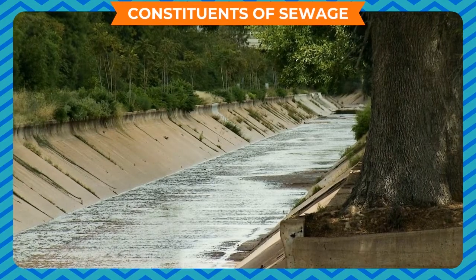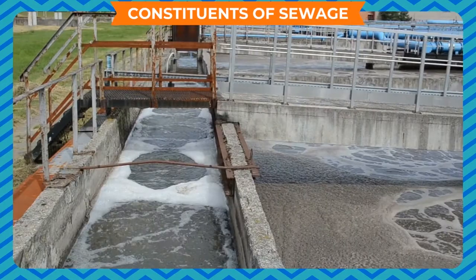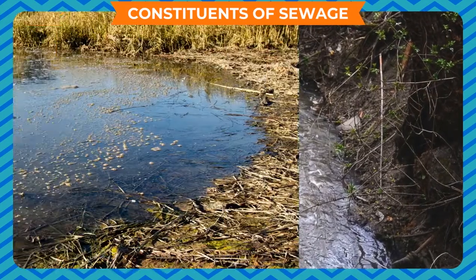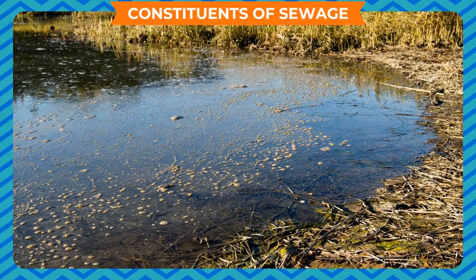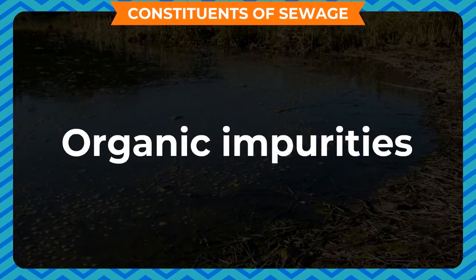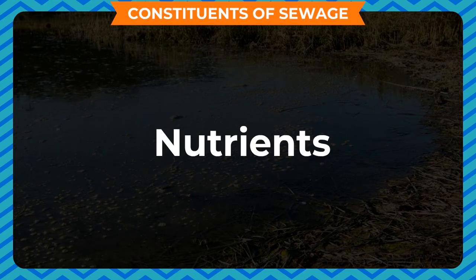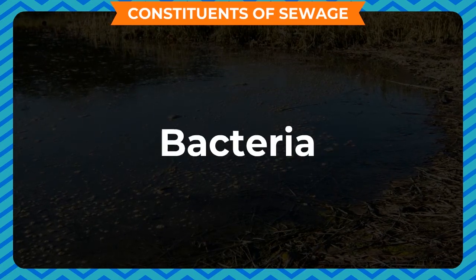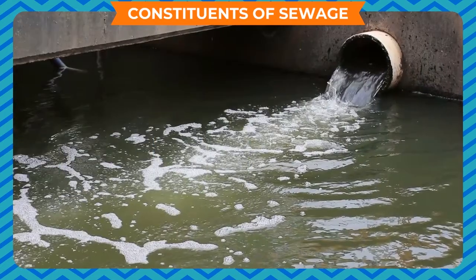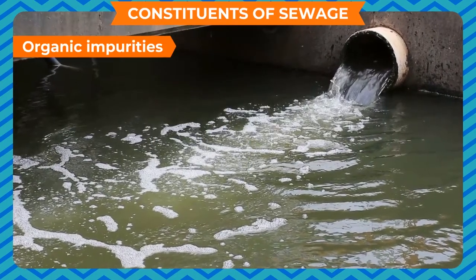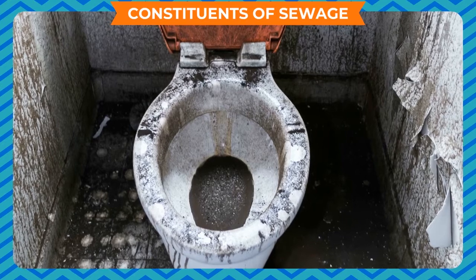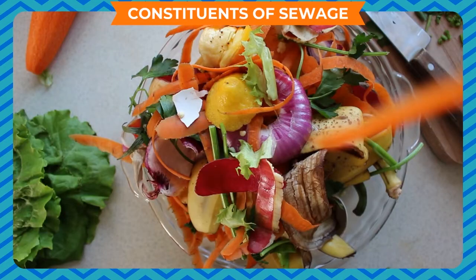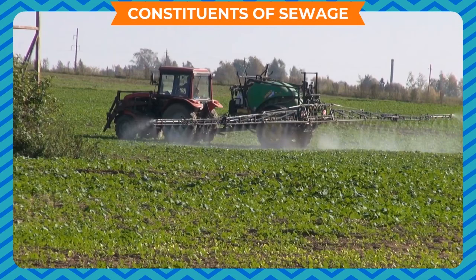Constituents of Sewage: Waste water generated from all the above-mentioned sources contains dissolved and suspended impurities — a complex mixture containing organic and inorganic impurities, nutrients, saprotrophic and disease-causing bacteria and microbes. Organic impurities include human excreta, animal waste, urine, oil, fruit and vegetable waste, pesticides, herbicides, etc.